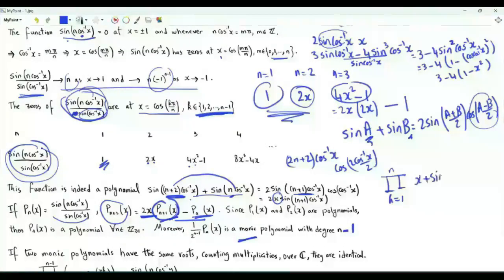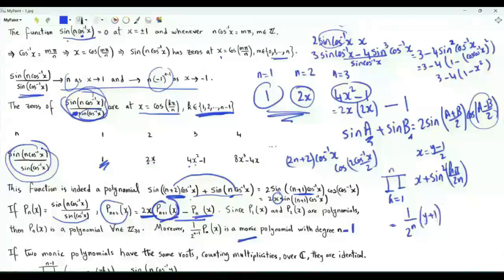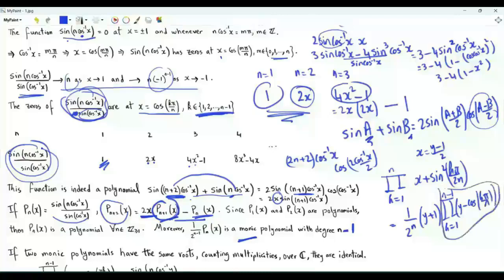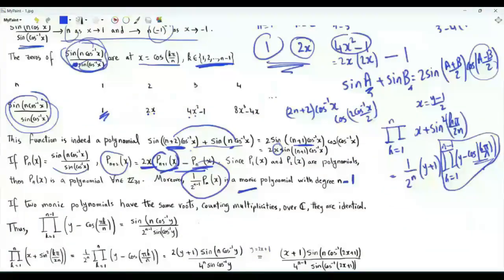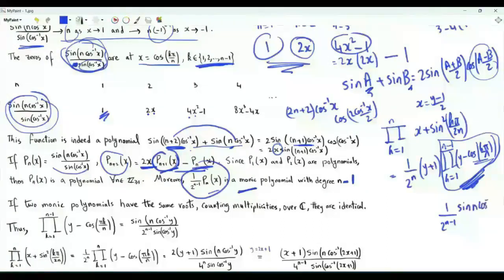The product of interest, k from 1 to n of x plus sine squared k pi over 2n, after doing the substitution x equals (y minus 1) over 2, is equal to 1 over 2 to the power n times (y plus 1) times the product k from 1 to n minus 1 of y minus cosine k pi over n. This part is a monic polynomial with degree n minus 1 and zeros at cosine k pi over n for k from 1 to n minus 1. This is exactly the same situation as for our polynomial P_n, and over the field of complex numbers these two monic polynomials have the same roots, so they are identical. This product is therefore 1 over 2 to the n minus 1 times sine(n cosine inverse y) over sine(cosine inverse y).